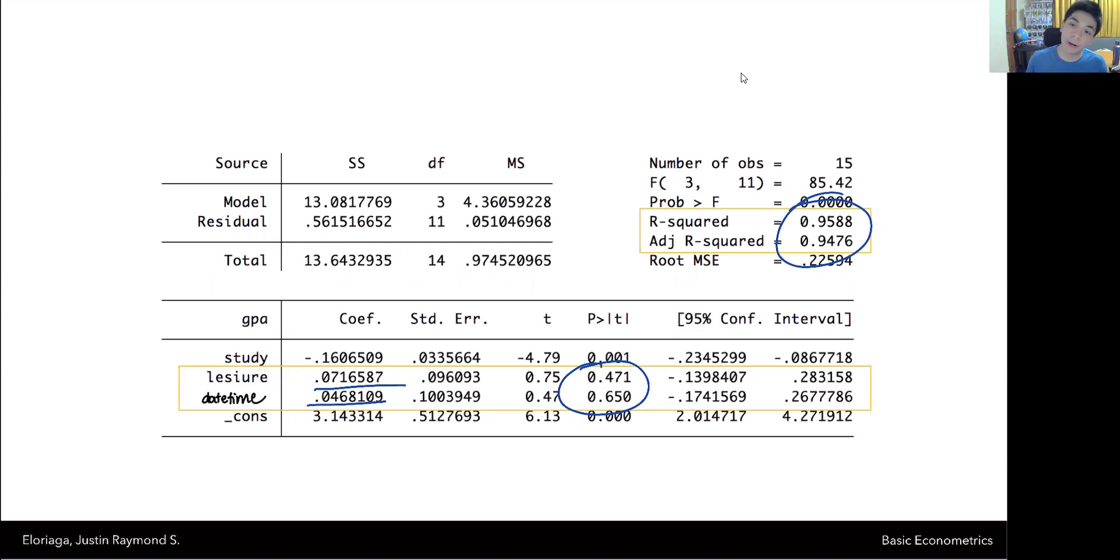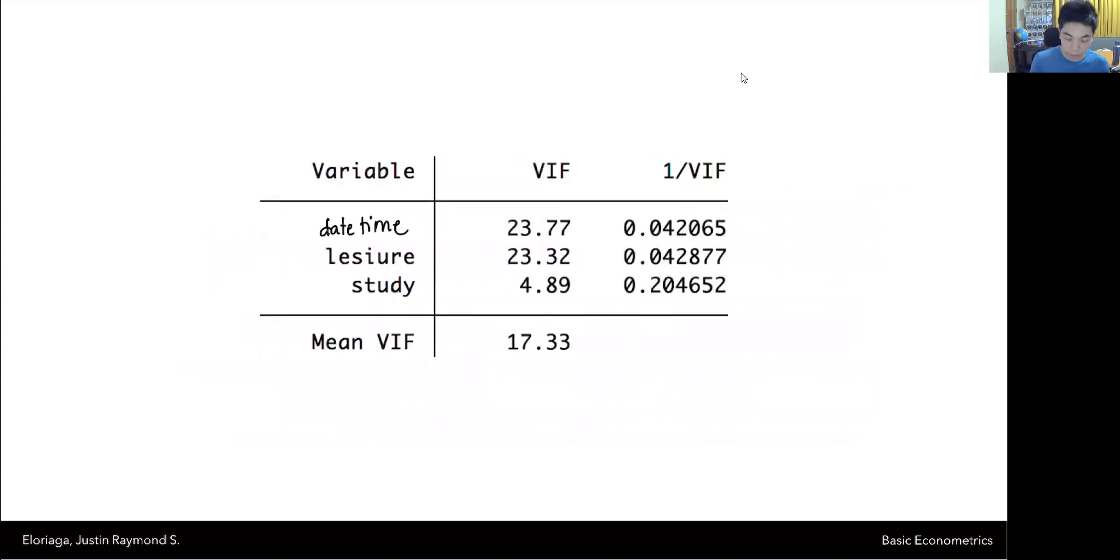Now, if we actually compute for the variance inflating factor and the tolerance, we see that for daytime, the VIF is extremely high. That's a 23, which is above the threshold of 10. And indeed, the tolerance is very low. It's below 0.1, meaning that these two variables are highly collinear with each other, and they may cause problems with our specific model formulation. That's an example of how the variance inflating factor is computed and essentially used, and also how it relates to this concept of the tolerance.